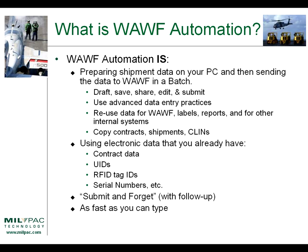WAF automation is preparing shipment data on your PC and then sending the data to WAF in a batch. This means you have the opportunity to draft your shipment, save it, go home, come back next week, share that data with other people within your company, edit your shipment, add in serial numbers that may not be available until the last minute before shipping, and then when you're ready, submit the data to WAF in a batch transaction. WAF automation also means you can use advanced data entry practices — things like lookup lists, calculators, and wizards to make the entry of data easier.